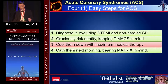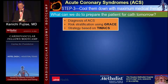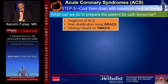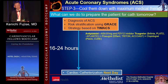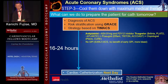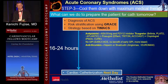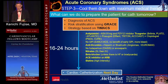Number three: cool them down with maximum medical therapy. You have decided this patient has ACS, risk stratified using GRACE score, and established an early invasive strategy based on TIMACS. You've posted the patient for next-day cardiac catheterization, giving you 16 to 24 hours to prepare for a successful PCI. Administer aspirin, and I would give ticagrelor as the drug of choice. No GPI, as it increases bleeding risk. Administer either heparin or bivalirudin. No fondaparinux or enoxaparin. Nitrate, beta blocker, ACE inhibitor, and statins are all important.